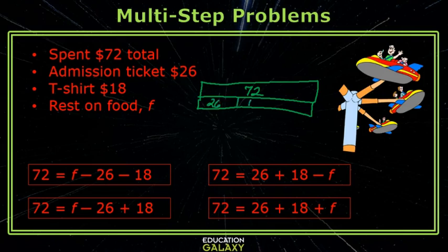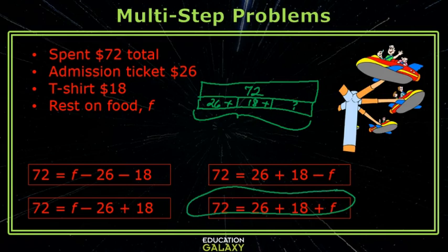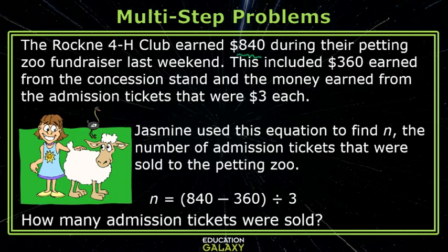admission ticket, he spent $18 on a t-shirt, and the rest on food. That means that these three have to add up to equal the 72. So the equation is: 72 = 26 + 18 + F.